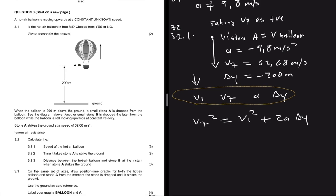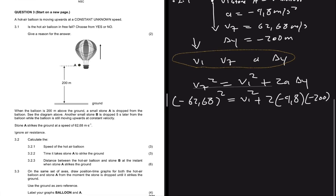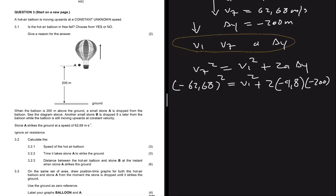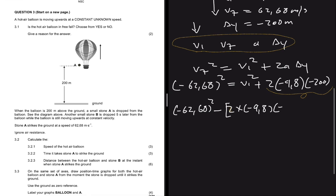Vf is minus 62.68 because up is positive and the stone is going downward. So: (−62.68)² = Vi² + 2 × (−9.8) × (−200). We rearrange to make Vi² the subject: Vi² = (−62.68)² − [2 × (−9.8) × (−200)]. Let me put this in the calculator.